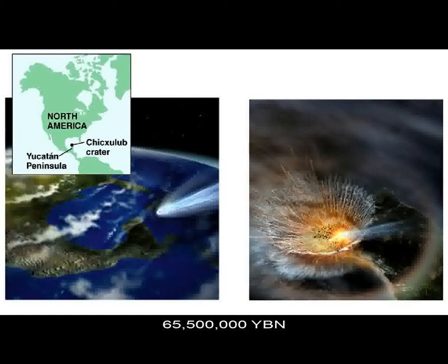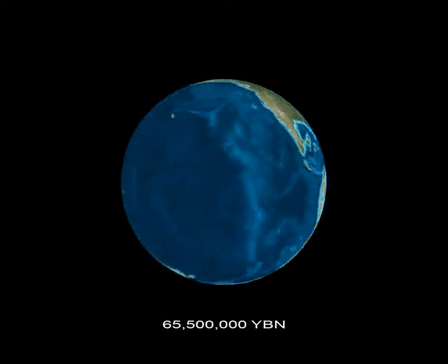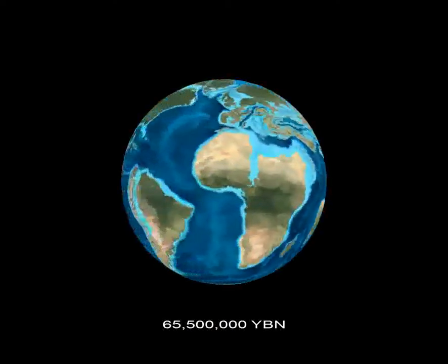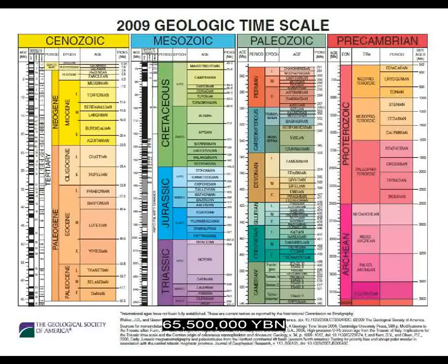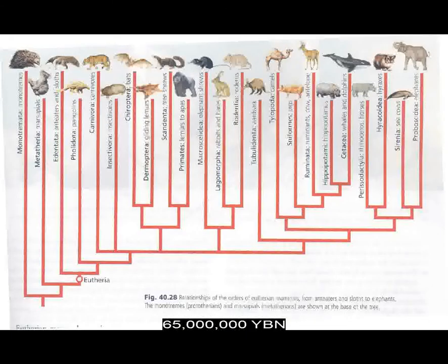Made extinct are 60% of plant species and all dinosaurs, mosasaurs, pterosaurs, plesiosaurs, and pliosaurs. A comet or meteor collides with the Earth in what is now the Yucatan Peninsula of Mexico, and huge amounts of lava erupt from India. No large animals survive on land, in the air, or in the sea. The end of the Mesozoic and start of the Cenozoic era, and the end of the Cretaceous and start of the Tertiary period. The start of the rapid diversification of mammals.